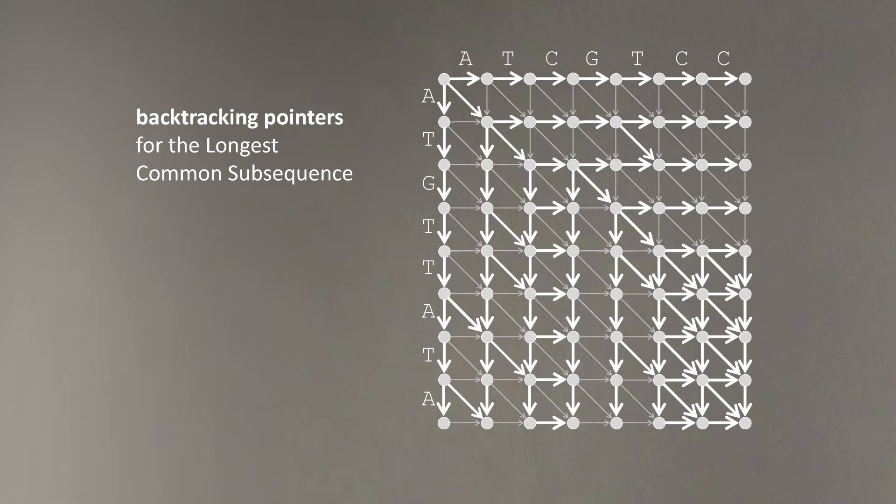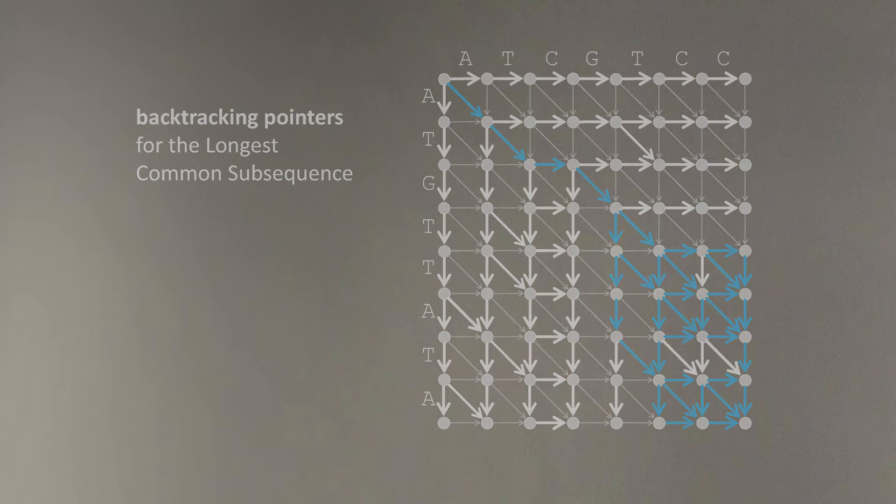Finding the longest common subsequence for these two strings. We can move from the final destination backwards using backtracking pointers. And slowly but surely, we will arrive to the initial node. And all paths that are traced by the blue edges represent the solutions to the longest common subsequence problem.